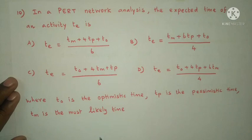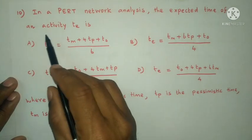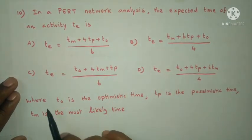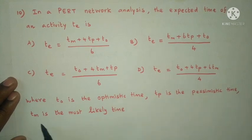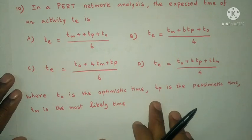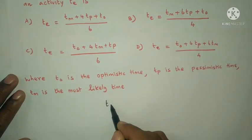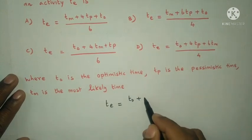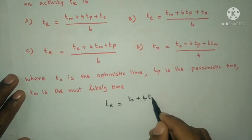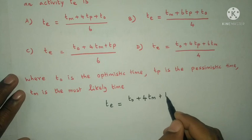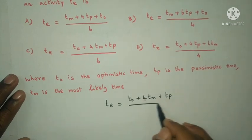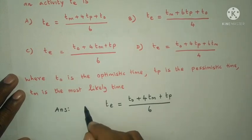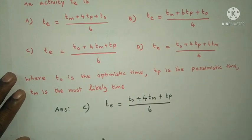Next question: In PERT network analysis, the expected time of an activity TE is calculated as: TE = (T0 optimistic time plus 4 times TM most likely time plus TP pessimistic time) divided by 6. The answer is option C.